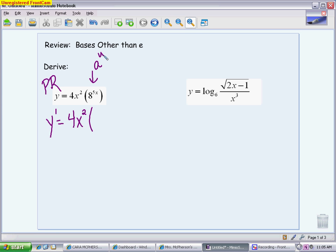So the derivative of it is the original exponential function, so 8 to the 5x, times the derivative of the power, which is 5, times the natural log of the base, plus the second times the derivative of the first. So the second is the 8 to the 5x, and the derivative of the first is 8x. So I'm going to put this in parentheses so it doesn't all kind of jumble together.